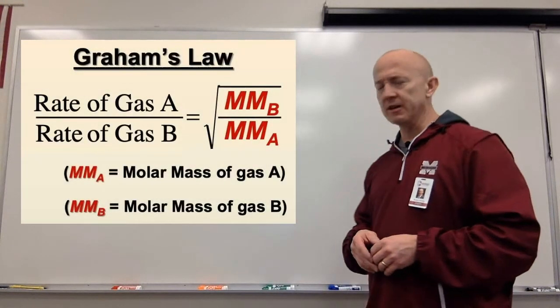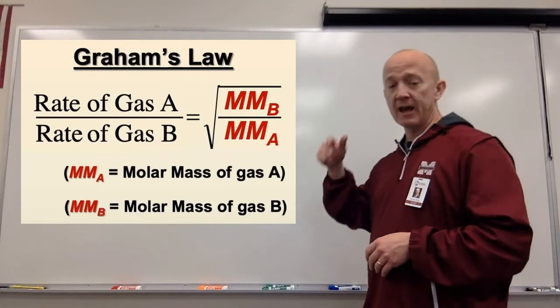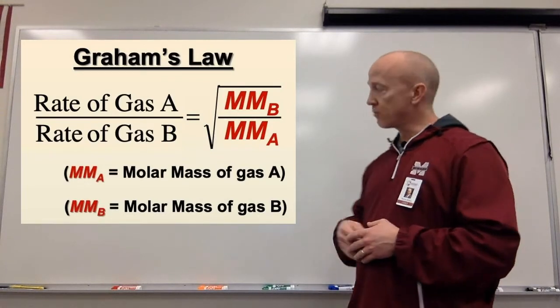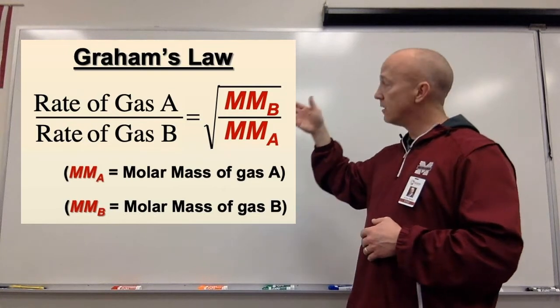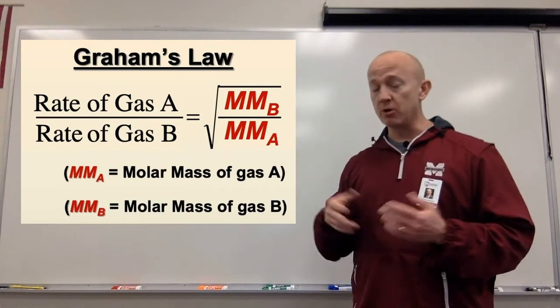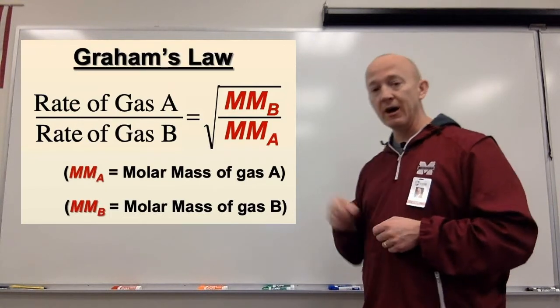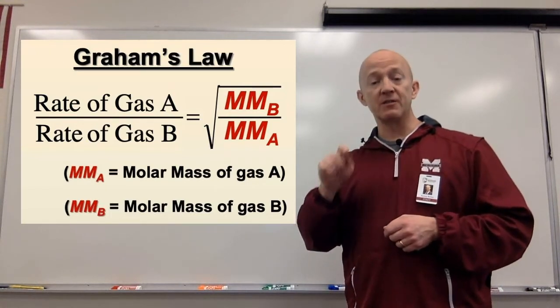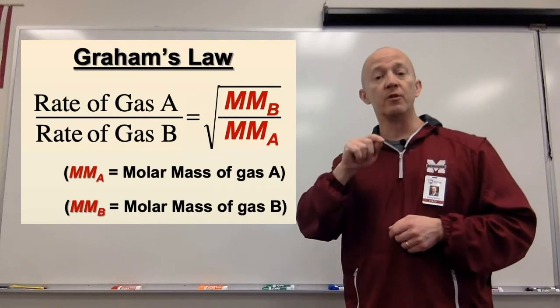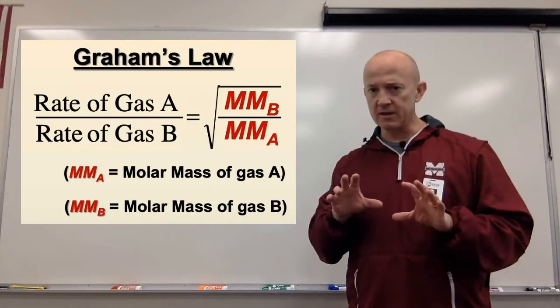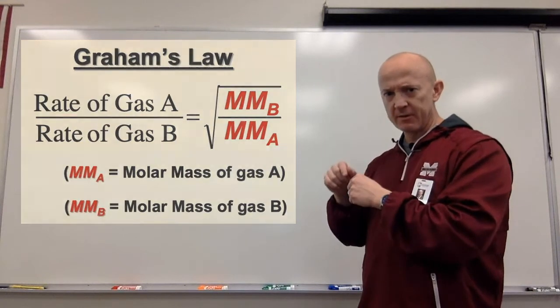Graham's Law works like this. If you want to compare the rate of one gas to another gas, the rate of the first gas, we'll call it A, over the rate of the second gas, we'll call it B, is equal to the square root of the molar mass of gas B over the molar mass of gas A. You get that? It's kind of a criss-cross thing happening in there.